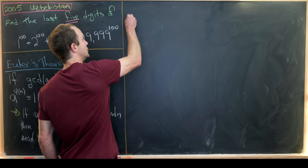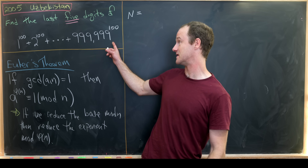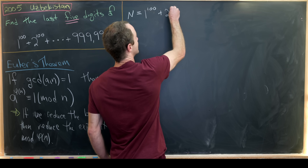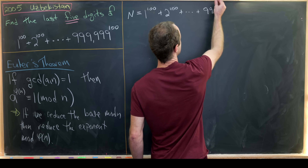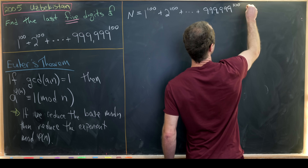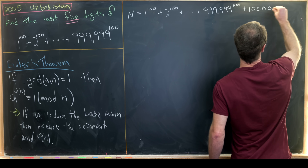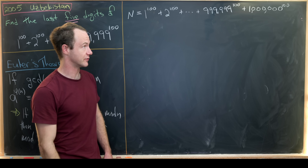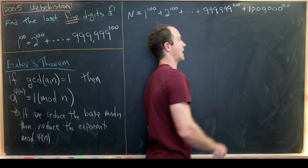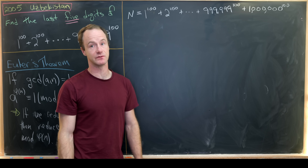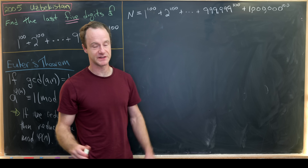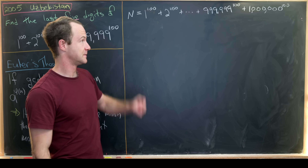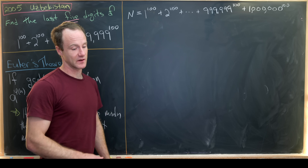I first want to define a new number N, which is almost exactly the given number. The only difference is I'm going to add one term to the end: 1^100 + 2^100 + ... + 999,999^100 + 1,000,000^100. I do this because it makes everything break up more easily. Notice that 1,000,000^100 ends in far more than five zeros, so it will not change the last five digits of our given number. Thus N and our given number definitely share the last five digits.